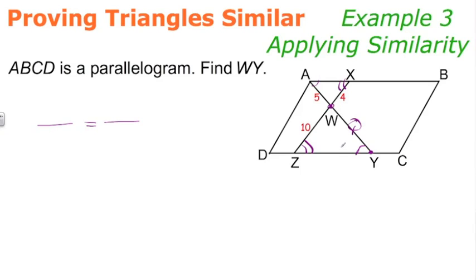So we can line up their corresponding sides in a proportion. So AW corresponds to YW, and XW corresponds to ZW. So from here, we simply plug our numbers in and solve the proportion. AW is 5, YW is what we're solving for, in this case the variable Q. XW is 4. And ZW is 10.